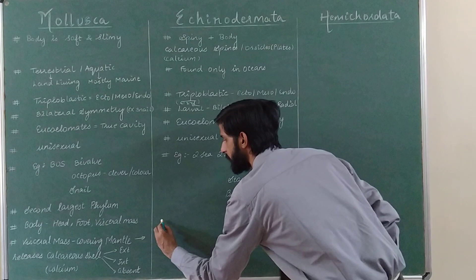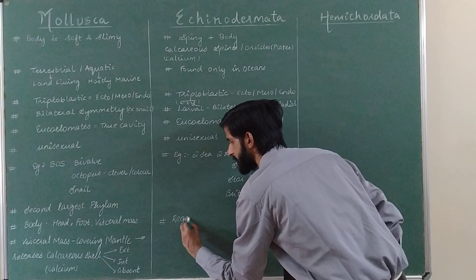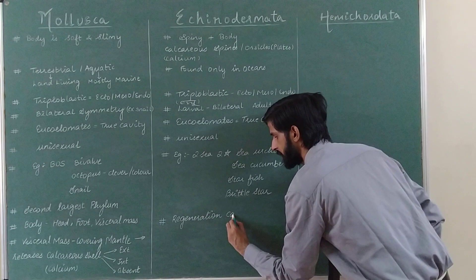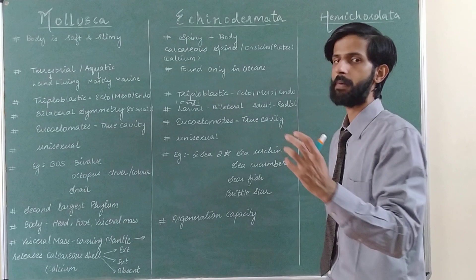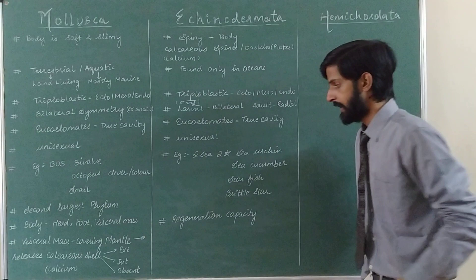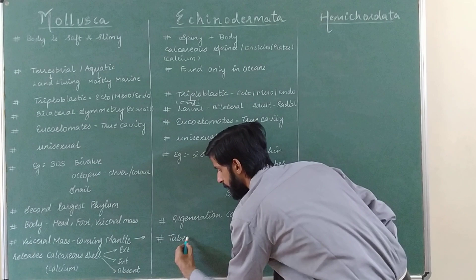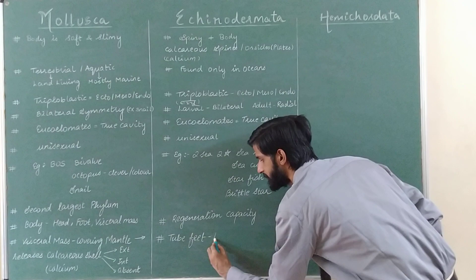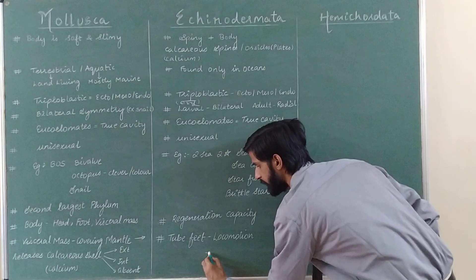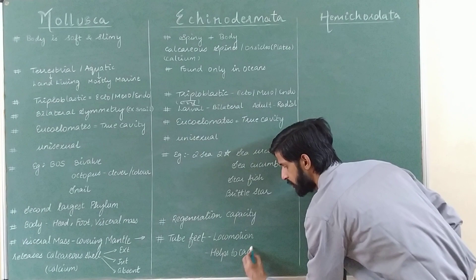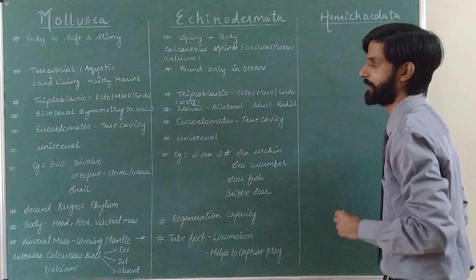A special point to remember about Echinodermata is that they have a good amount of regeneration capacity. Even if one part of the body is lost, it regenerates and grows again. They also show the presence of tube feet, which help them in locomotion and also help them to capture their prey.